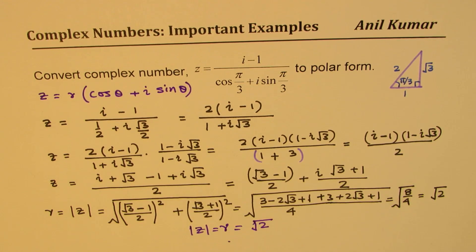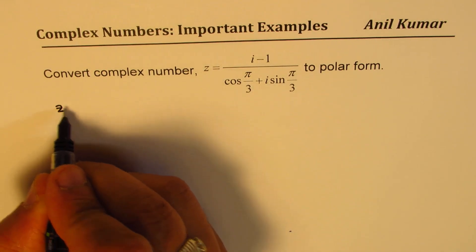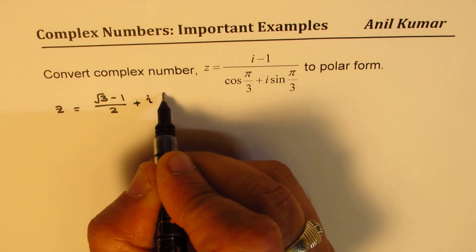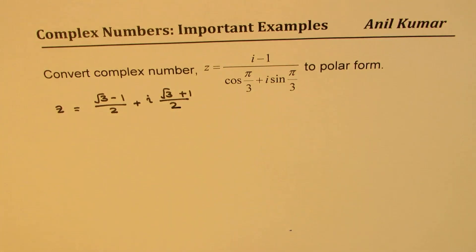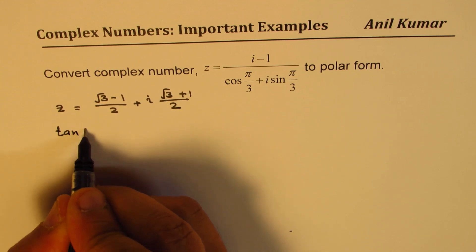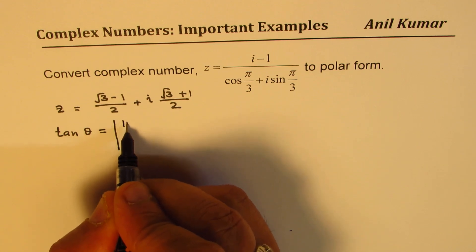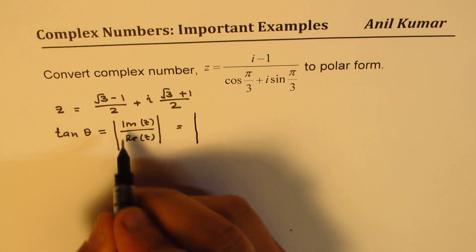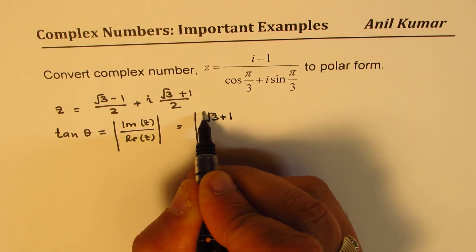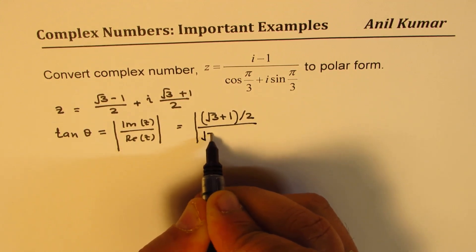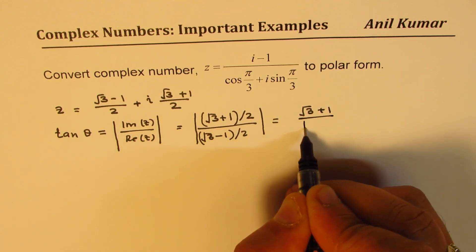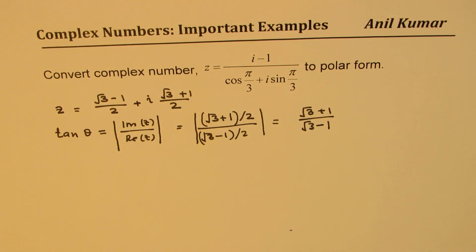Now on a fresh page, let's find out the argument θ. So we can write the complex number z as equal to (√3 - 1)/2 plus i(√3 + 1)/2. Now to find the argument, we can say tan θ is basically equal to the ratio of imaginary part to the real part of z. So that gives you (√3 + 1)/2 divided by (√3 - 1)/2, which is (√3 + 1)/(√3 - 1). This is positive, so we can drop the absolute values.